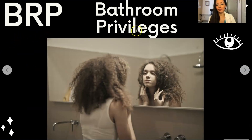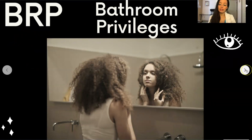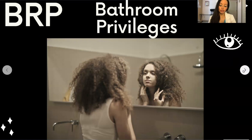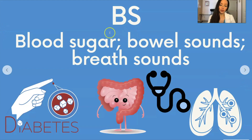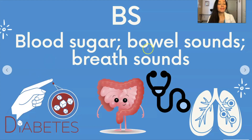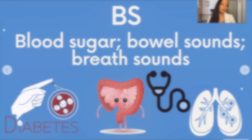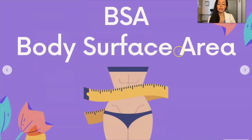BRP could be bathroom privileges — not a very common abbreviation, but I'm getting a lot of these abbreviations from the fundamentals of nursing book, Potter and Perry, so just covering whatever they put in their book. BS is not what you normally use BS for — it is blood sugar, so in diabetes their BS was 167. It could also be bowel sounds, such as BS in all four quadrants, or it could be breath sounds.